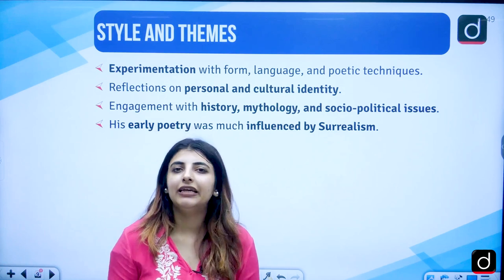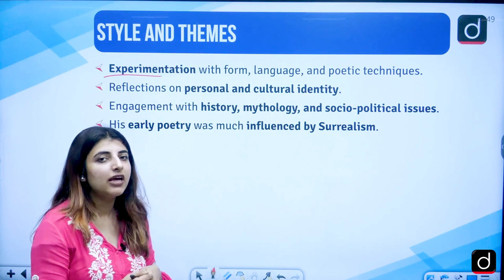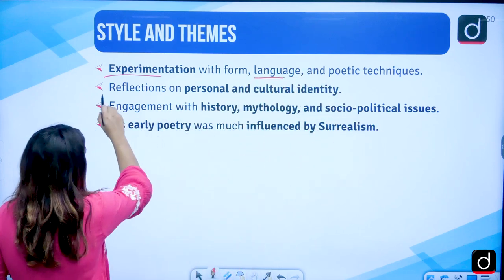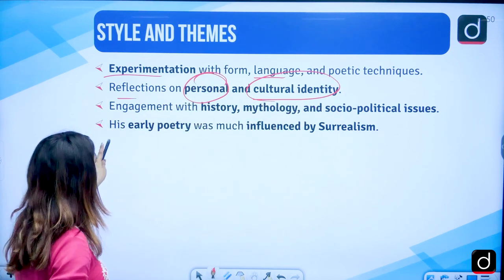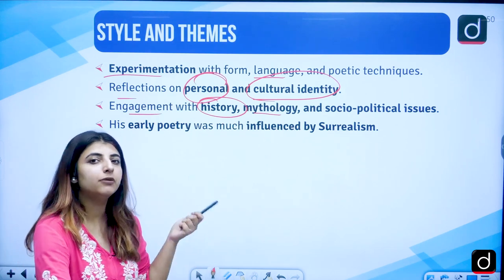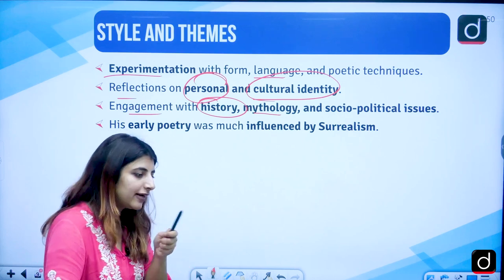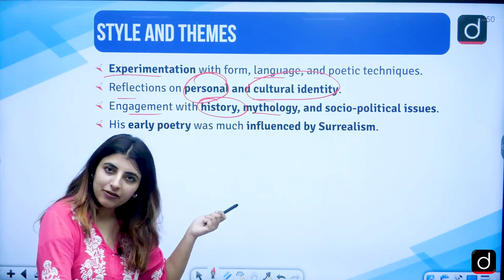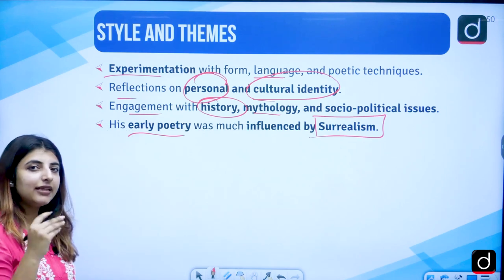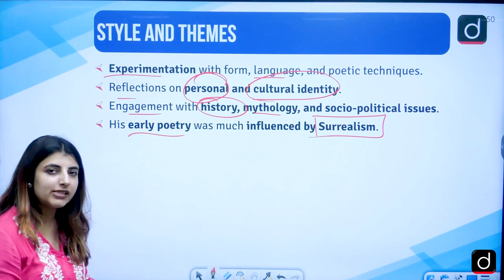What are the styles and themes that we see prominently in his works and poems? He is one such person who tries to experiment with things — with the form of poetry, language, and poetic techniques. Reflections on personal and cultural identity, engagement with history, mythology, and socio-political issues can be seen in his poems. His early poetry was much influenced by the movement of Surrealism.